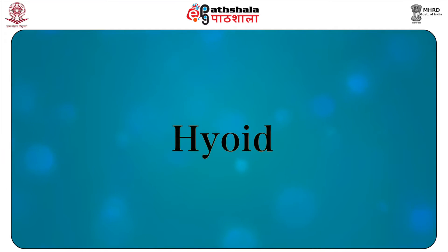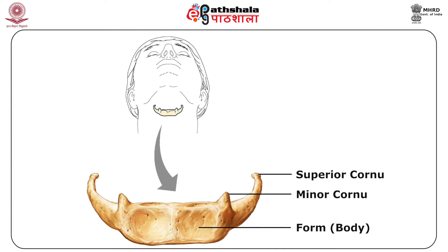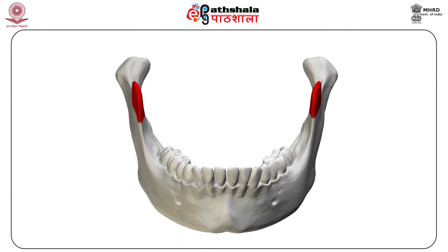The hyoid bone is shaped like a horseshoe and is suspended from the tips of the styloid processes of the temporal bones by the stylohyoid ligaments. It comprises five parts: a body, two greater cornua, and two lesser cornua. The mandible is the largest and strongest bone of the face, serving for the reception of the lower teeth. It consists of a curved horizontal part called the body and two vertical parts called the rami, which join the ends of the body at right angles.